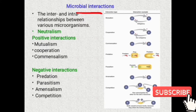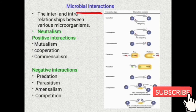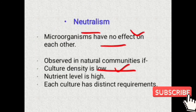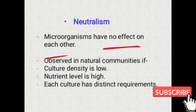There is a large number of microorganisms present in the atmosphere, in soil, in air, and in water. There is interaction for nutrients, accommodation, and protection. These ongoing interactions are termed microbial interactions. The first interaction is neutralism — in neutralism there is no impact or effect on each other.